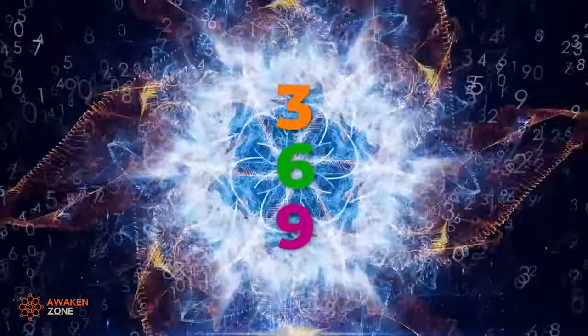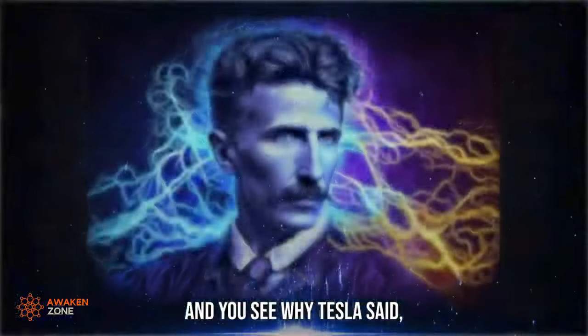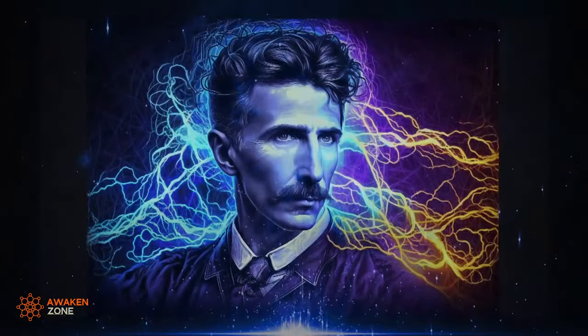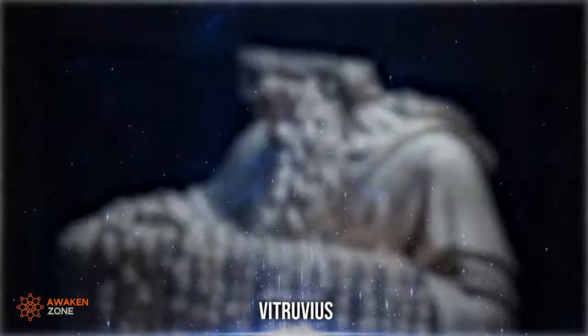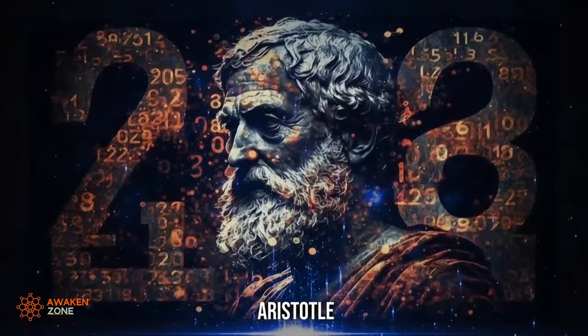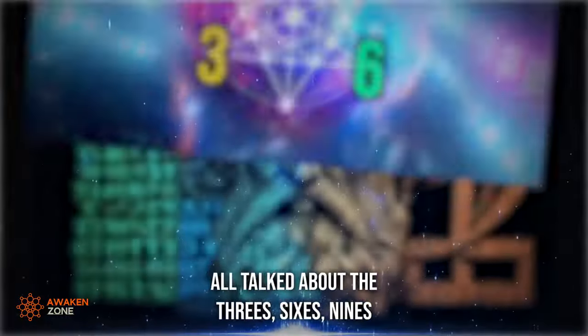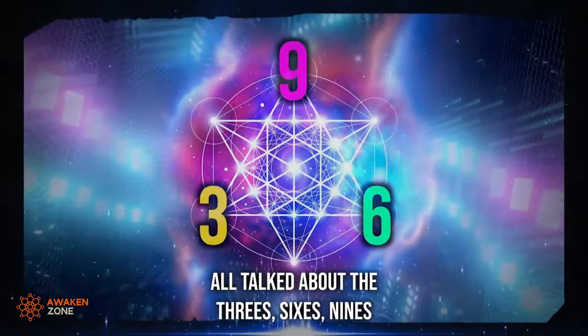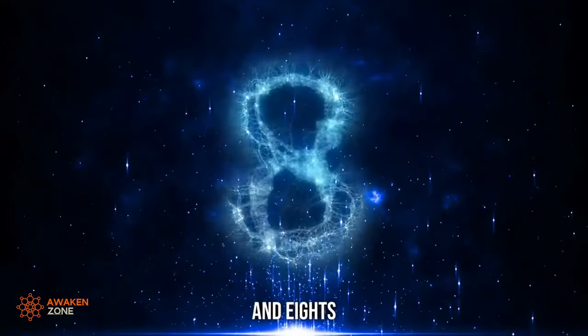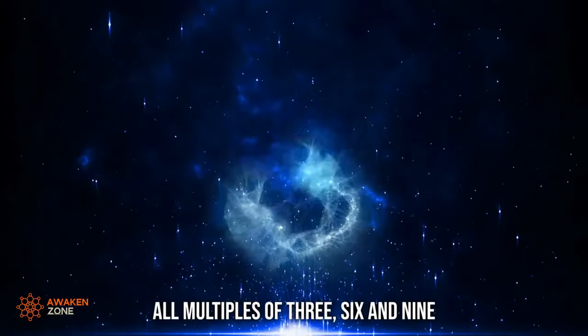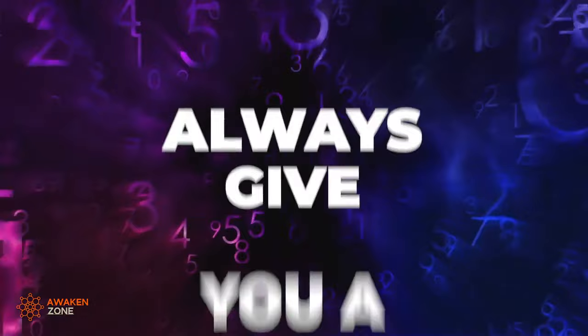Now take the multiples of three, sixes and nines, and you see what Tesla said, and it wasn't just Tesla. Pythagoras, Vitruvius, Aristotle, Plato - all talked about the three, sixes, nines, and eights. So they're special. All multiples of three, six, nine always give you three, six, and nine.